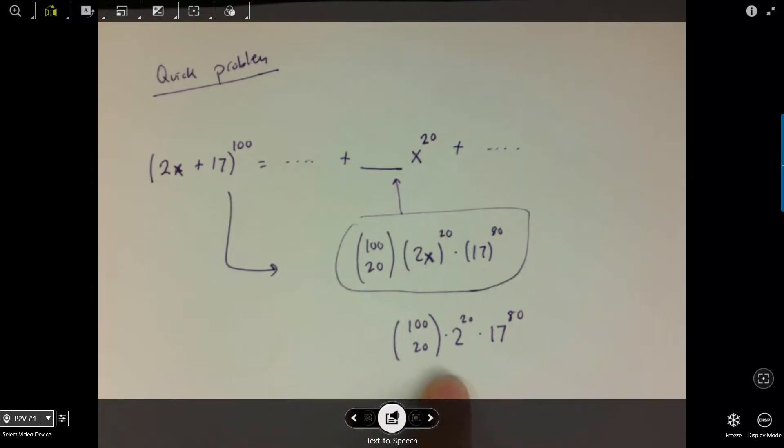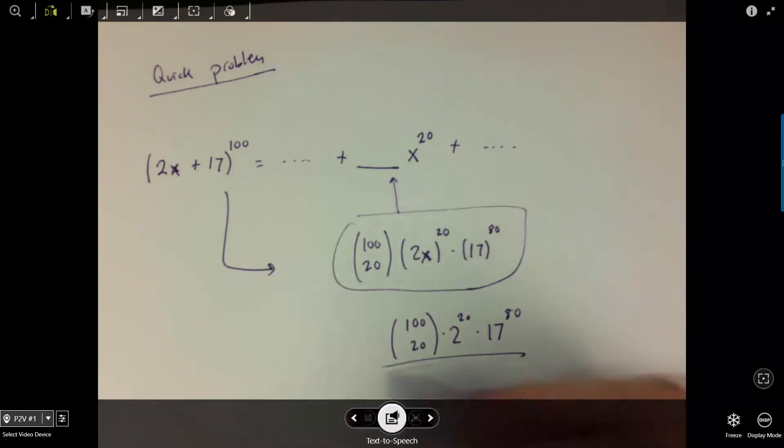This is going to be an absolutely astronomically large number, so I'm not going to write it out, but this is what the coefficient is. And then you've got x to the 20 sitting off to the edge there.